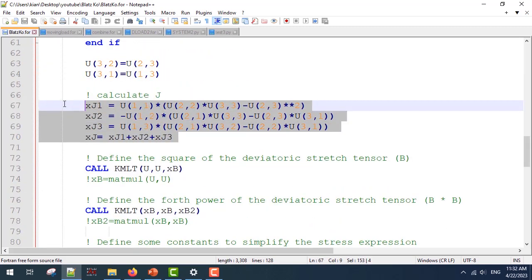Next, I'm going to calculate the determinant of the deformation gradient, or determinant of the u matrix. For simplicity, I've defined three parameters and the sum of them is going to give me the determinant.